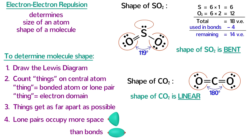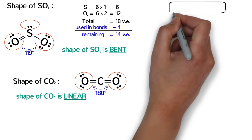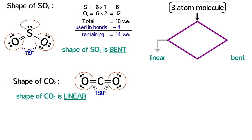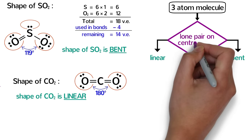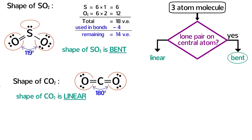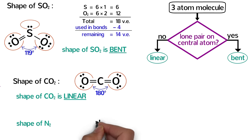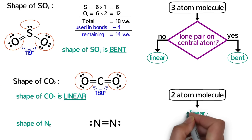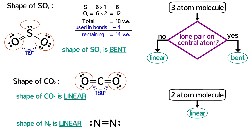As we take a step back and look at SO2 and CO2, we can see that for a three-atom molecule, the only two possible shapes are linear or bent, and the deciding factor is whether or not there is a lone pair on the central atom. Bent molecules have one or more lone pairs on the central atom, while linear molecules have no lone pairs on the central atom. Two-atom molecules such as N2 do not have a central atom, which means they cannot have any bond angles. So the only possible shape for two atoms is linear.